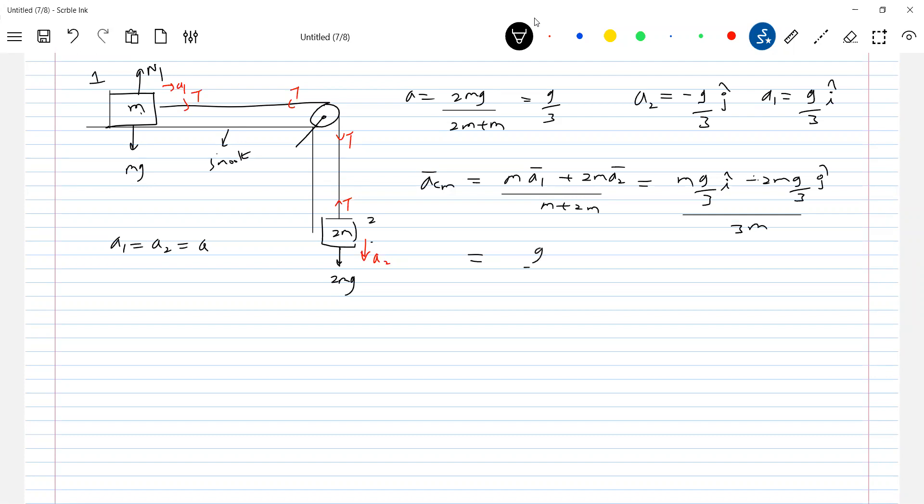m gets cancelled. So this will be g by 9 i cap, 2g by 9 j cap.